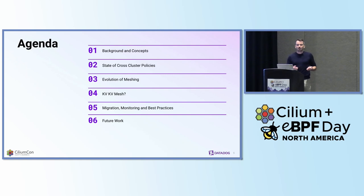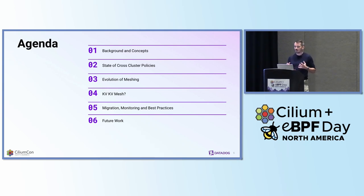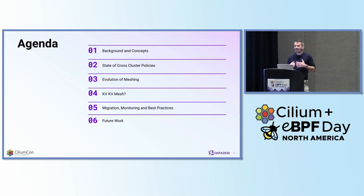As an agenda for today, we're going to start with a refresher about why network policies are important and why we need them in the first place, and how they are being implemented within Cilium, most importantly. We'll then iterate over what solutions are available when we look to make them work amongst multiple clusters, and finally give you some insights around what we felt was interesting to share about when operating such a setup.